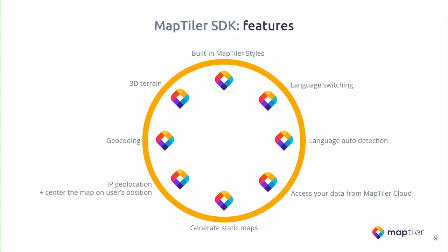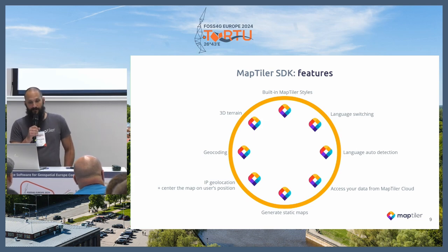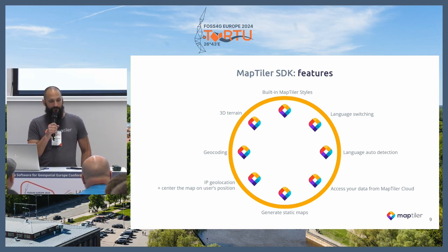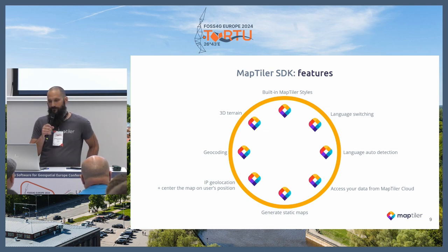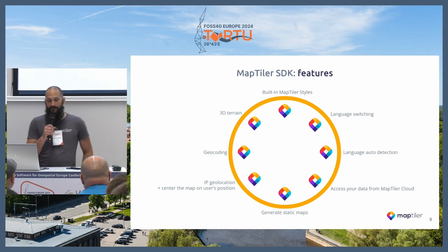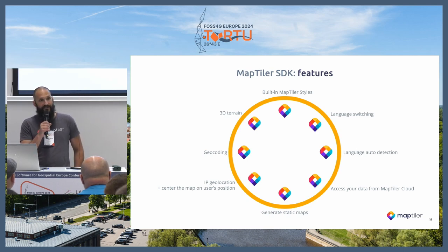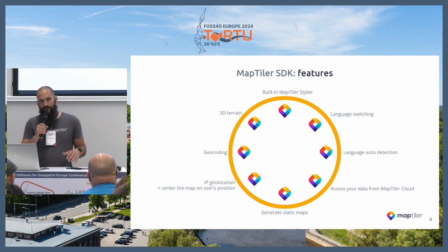There is also language autodetection based on the user's location or browser settings. You can generate static maps, geolocate the user's position via the API or device geolocation capabilities, use geocoding for forward and reverse lookups, and there is 3D terrain visualization directly in the web browser. Those are some of the features MapTiler SDK adds on top of MapLibre.